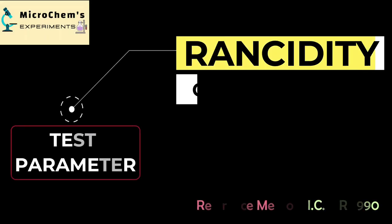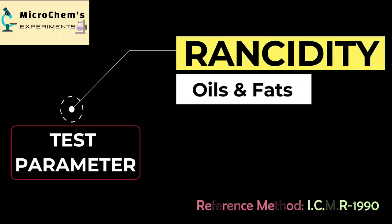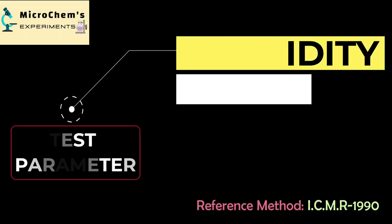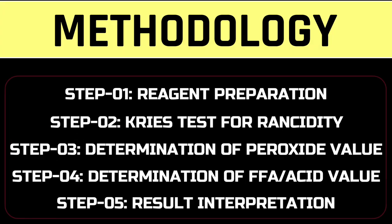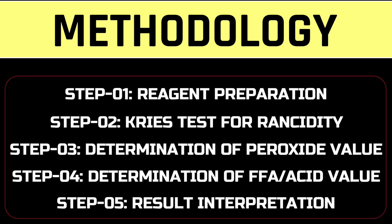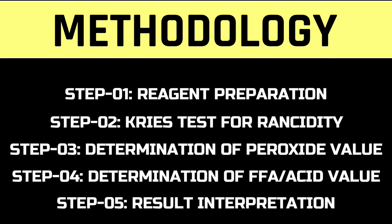Hello viewers, today we are going to check the rancidity of an oil or fat sample. To check the rancidity, we need to prepare reagents followed by conducting the Kreiss test. Then we can determine the peroxide value and acid value and interpret the result.